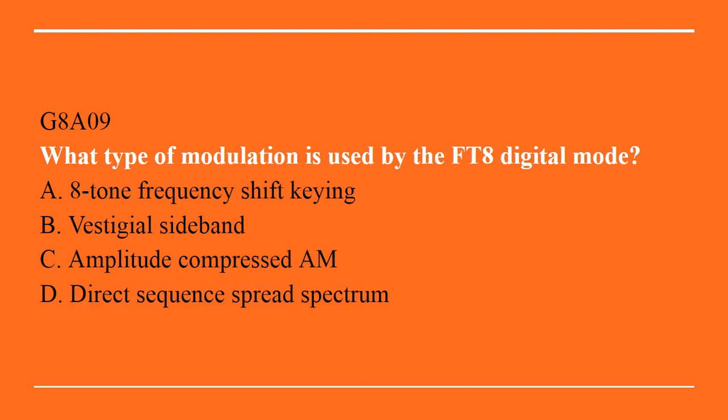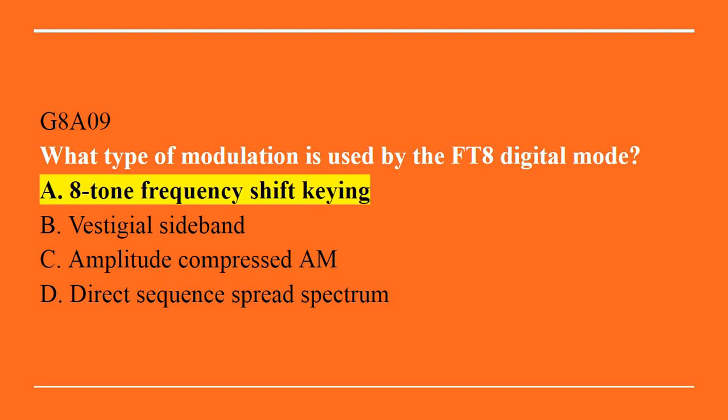G8A09: What type of modulation is used by the FT8 digital mode? A. Eight tone frequency shift keying. B. Vestigial sideband. C. Amplitude compressed AM. D. Direct sequence spread spectrum. Correct answer is A. Eight tone frequency shift keying.